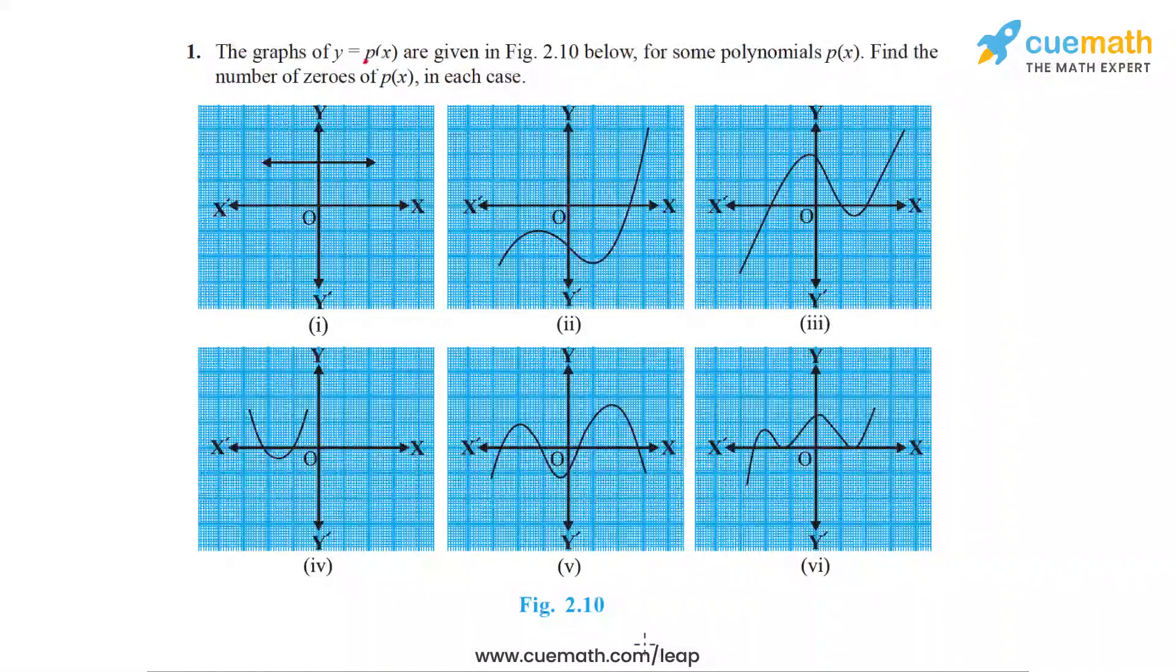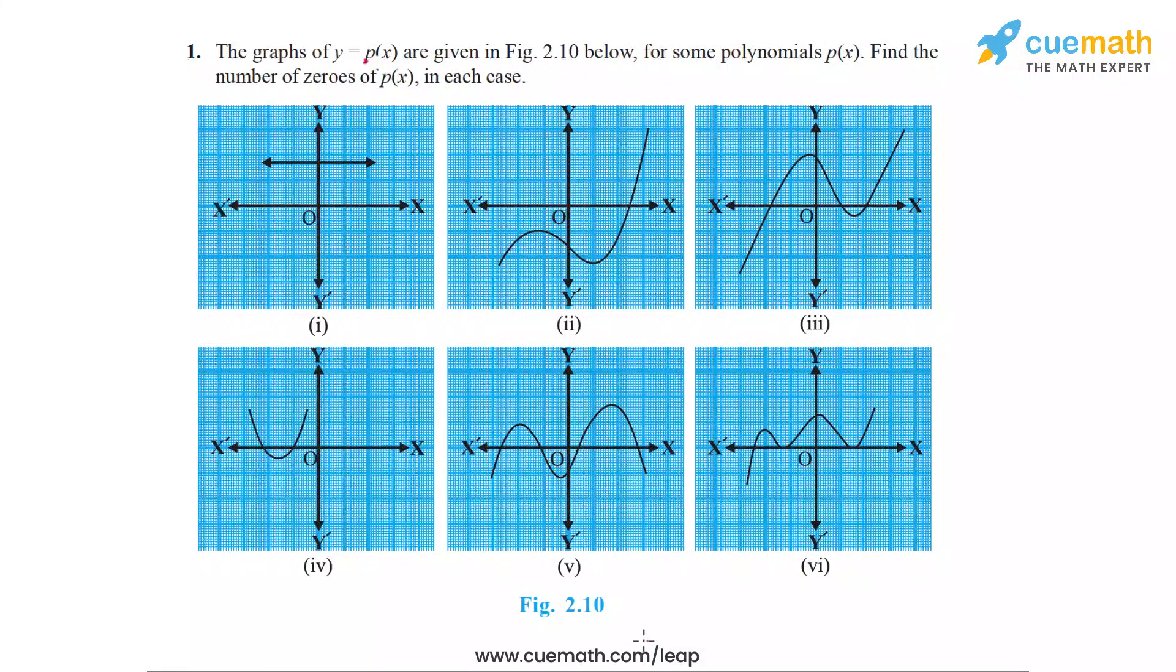In question 1, the graphs of 6 different polynomials p(x) are given to us and what we have to determine is the number of zeros of p(x) in each case. So just by looking at the graph, we have to determine how many zeros the polynomial has. So what reasoning can we use to solve this problem?